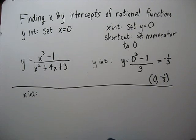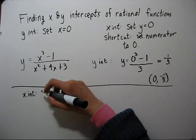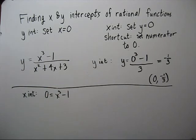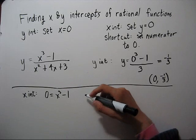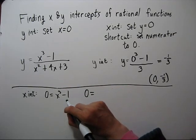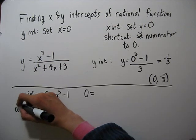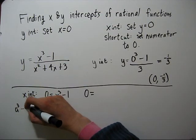Now to find our x intercept, we have the shortcut of setting our numerator to zero. We'll need to factor this. This is the difference of cubes. And there's a formula you can memorize if you want to.